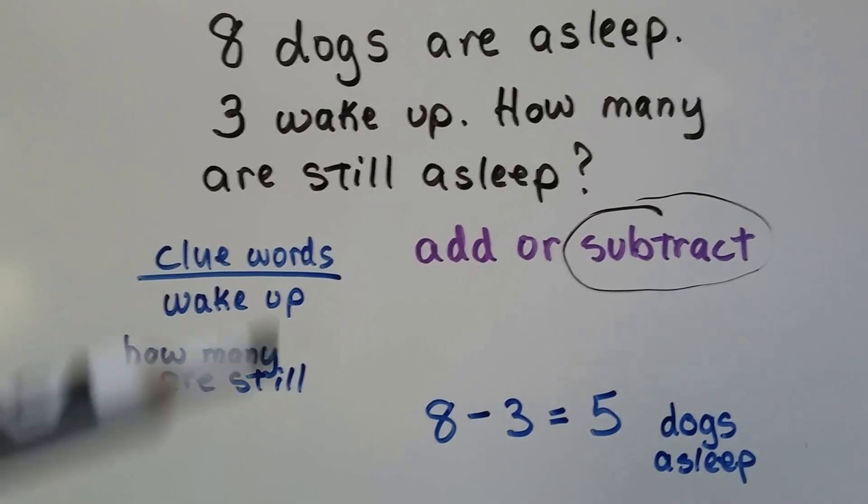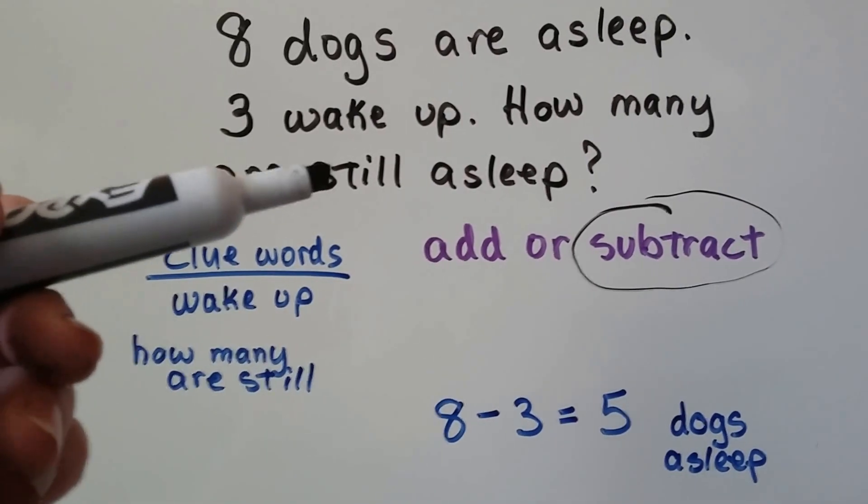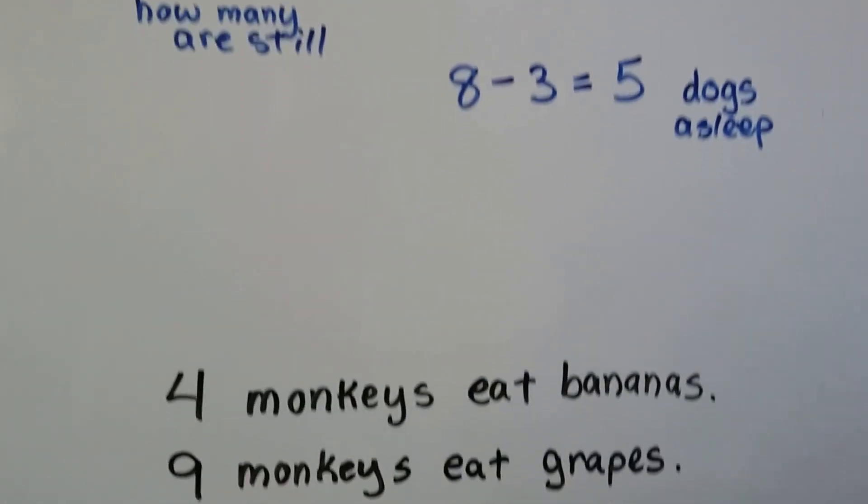So we do eight minus three equals five dogs asleep. See? It told us we needed to find the ones that were still asleep.